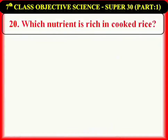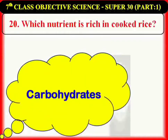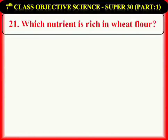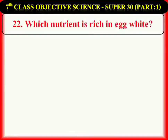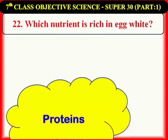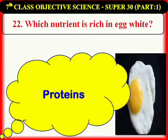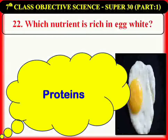Which nutrient is rich in cooked rice? Carbohydrates. Which nutrient is rich in wheat flour? Carbohydrates. Which nutrient is rich in egg white? Proteins. The egg yolk contains the fat called cholesterol. As cholesterol is not good for health, people who eat more eggs leave the egg yolk and eat only the egg white, as it is the richest source of proteins.